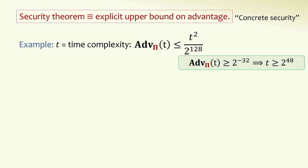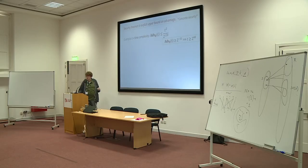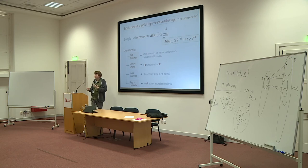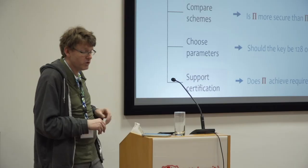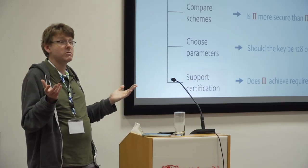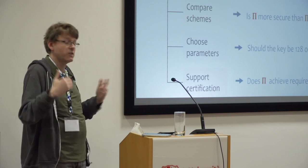With such a statement, you can infer things — for example, if you want the advantage to always be smaller than 2^{-32}, you can derive from the theorem that it takes time at least 2^{48} to achieve that. These security theorems allow us to better understand schemes in the real world: what kind of adversaries they tolerate, how to compare schemes, since some are more secure than others.